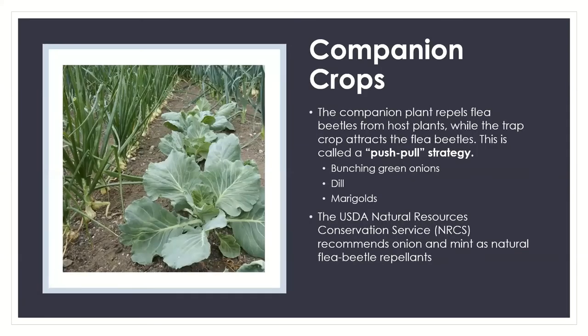Using companion plants and trap crops together creates a push-pull strategy. Your companion plants repel flea beetles away from your cash crop while the trap crop outside attracts the beetles — pushing them away from what you want while pulling them toward something they want even more. Bunching green onions, dill, and marigolds are great companion crops, and the Indian RCS also recommends onion and mint as natural flea beetle repellents.